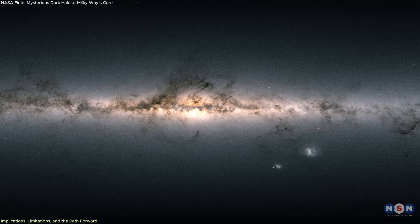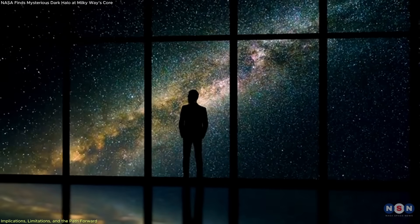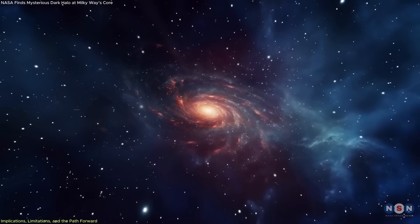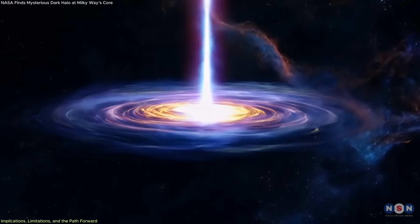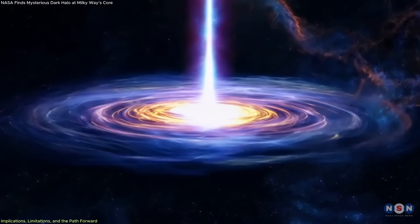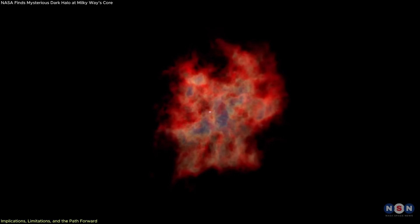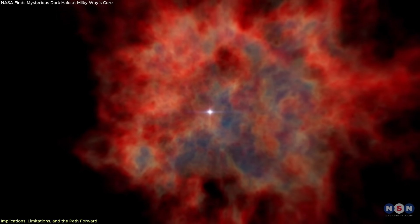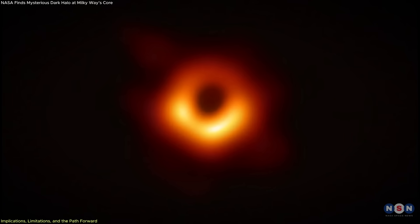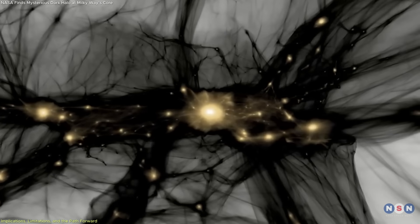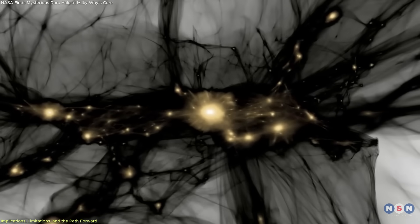If this dark halo truly represents a manifestation of light-dark matter, the implications are significant. It could change how we model the early universe, how we understand galaxy formation, and how we interpret large-scale structures across space. There are still alternative explanations for the ionization patterns. Some researchers argue that the energy could be coming from previously undetected supernovae, or pulsars. Others suggest low-level activity from Sagittarius A-star might be more complex than we currently model. What makes the dark matter explanation compelling isn't that it's the only possible one, it's that it explains multiple anomalies simultaneously.